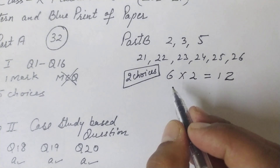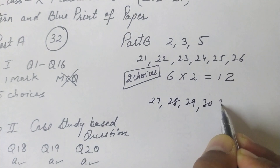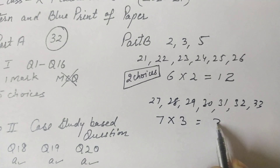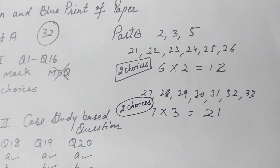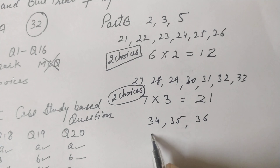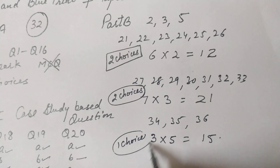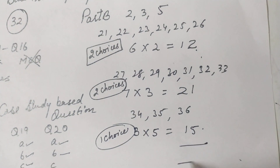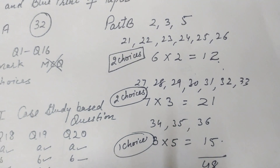There are seven three-mark questions: questions 27 to 33, totalling 21 marks, with two internal choices. Then three five-mark questions: questions 34, 35, and 36, totalling 15 marks, with one internal choice. So Part B totals 12 + 21 + 15 = 48 marks, and Part A (32) + Part B (48) = 80 marks total.